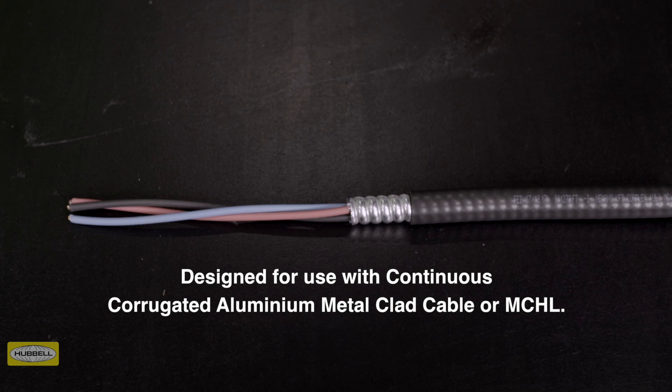This dual certified cable gland is designed for use with continuous corrugated aluminum metal clad cable or MCHL. Assembly instructions are provided with all HAWC cable glands or can be downloaded via the HAWC website.